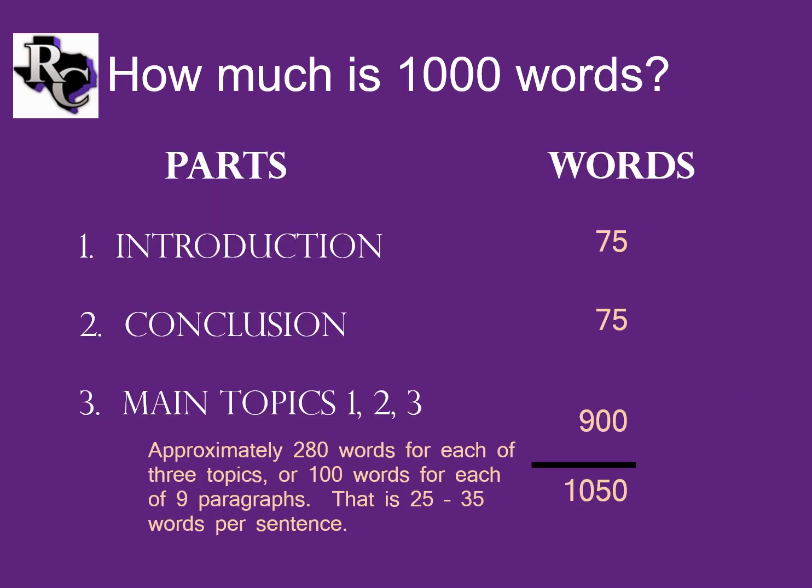Most papers required in college are going to be 1,000 to 1,500 words. That may sound like a lot, but we're going to look at what those numbers really mean. You need an introduction with a thesis statement — that's about 75 words. And you'll need a conclusion that revisits all your points — another 75 words. That's 150 already, leaving only 850 for your three main topics, about 280 words each. Your body paragraphs will be the biggest part, but each paragraph will end up only having about 100 words. When you think back to each paragraph needing an intro, development, and evidence, that adds up to 100 pretty fast.